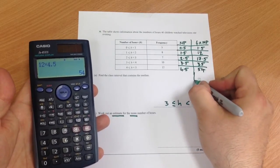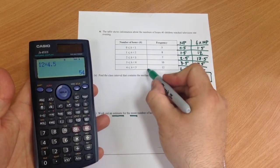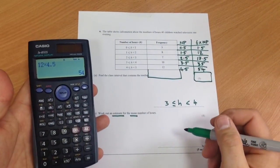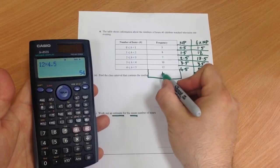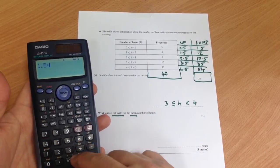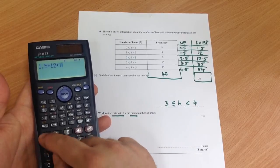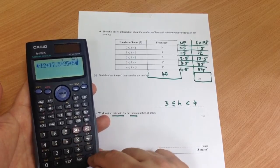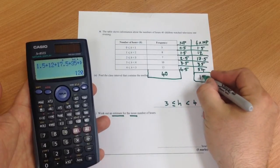Now you need to add up that column and you need to add up that column. You know this one adds to 40 because it tells you in the question. So add up the last column: 1.5 plus 12 plus 17.5 plus 35 plus 54 equals 120.